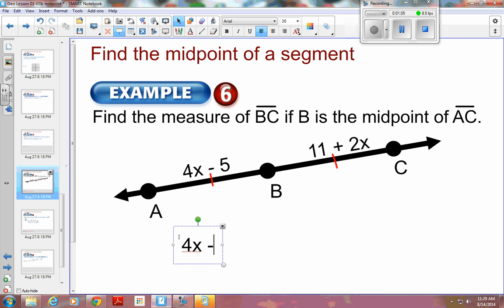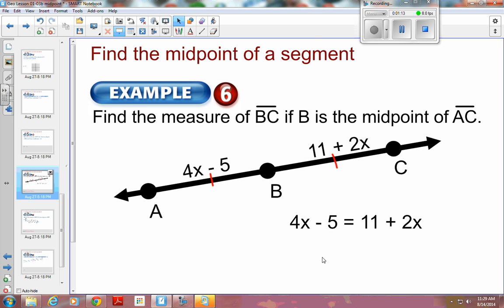So 4X minus 5 has to be equal to 11 plus 2X. From there, it's pretty easy to solve. We would get the X's together. 4X is bigger than 2X, so I'm going to subtract 2X from both sides.